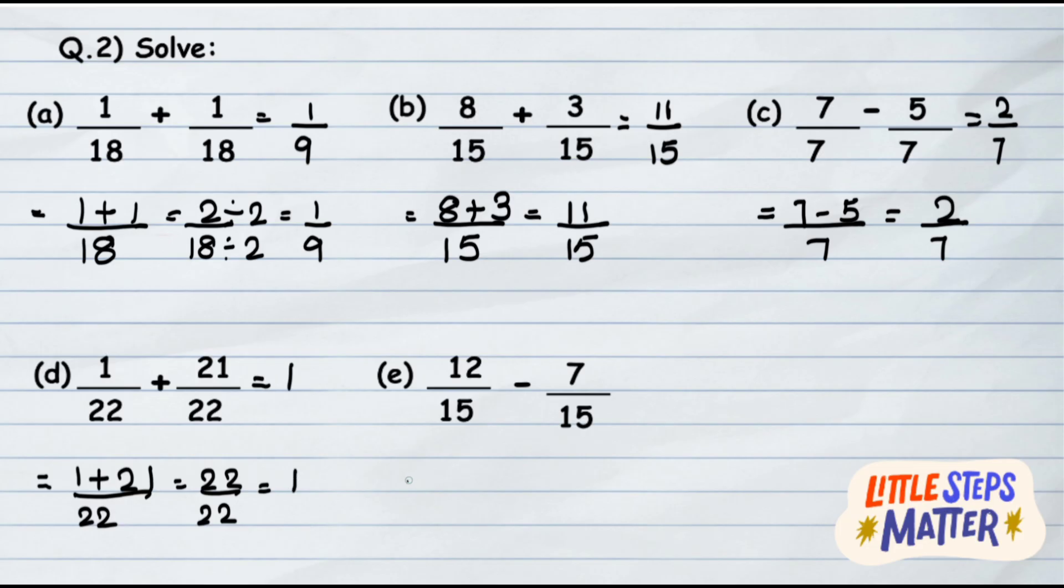Here again denominators are same, so subtract the numerators. It gives you 5 upon 15. Is it the simplest form? No, because 5 and 15 go in the table of 5. So simply divide both by 5 and it gives you the answer 1 upon 3.